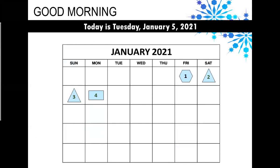And you can see that our pattern is a hexagon, triangle, triangle, rectangle. Today is Tuesday, January 5th, 2021. So what will the shape be that will go along with January 5th? Right, back to the hexagon again.